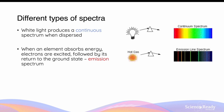When an element absorbs energy, such as heat, the electrons in the atoms of this element will undergo excitation and transition from the ground state to an excited state. Excited electrons will never stay in their excited states forever. When they return to the ground state, they will release energy in the form of electromagnetic radiation. This energy released will be equal to the difference in energy levels of the orbits that the electrons are transitioning between.